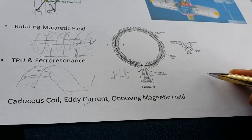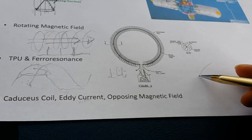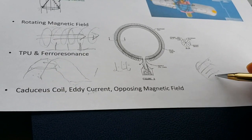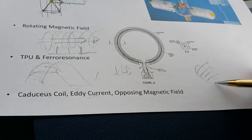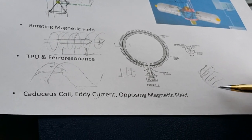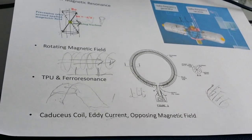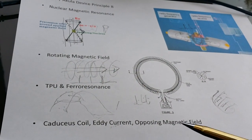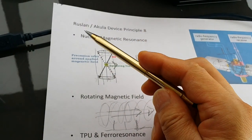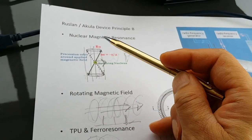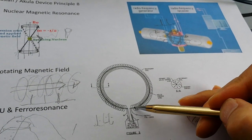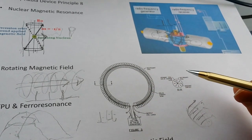Eddy current is where a magnetic field produces a circular current — normally it's a loss. But when we can harness this and make it go in the same direction as the magnetic field, then something remarkable happens. All these phenomena are the same, though I didn't go into the detail of each. This is important to understand the Ruslan Akula device, because he mentions this and the rotating magnetic field — we need to have this 90-degree direction.